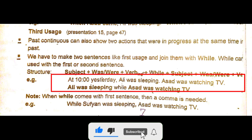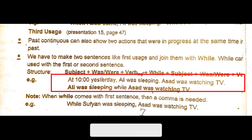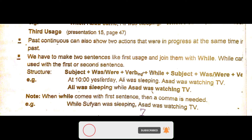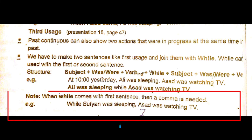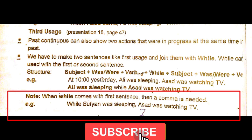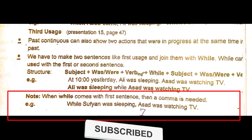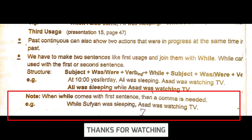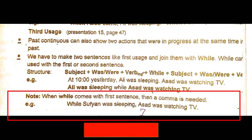Example: 'Ali was sleeping while he was watching TV.' Note: when 'while' comes with the first sentence, a comma is needed. For example: 'While Sofyan was sleeping, he was watching TV.'